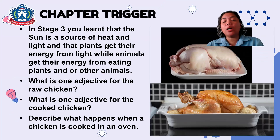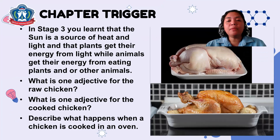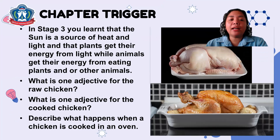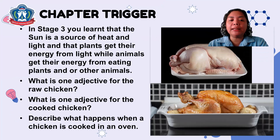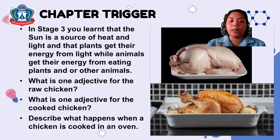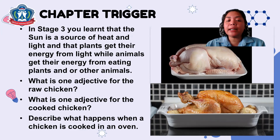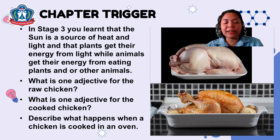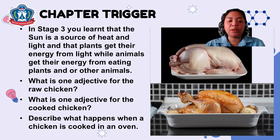In your Science 3, you learned that the sun is the source of heat and light, and that plants get their energy from light, while animals get their energy from eating plants and/or other animals — we learned that from our food chain. What is one adjective for the raw chicken at the top? And how about the cooked chicken at the bottom? Share your answers during our class.